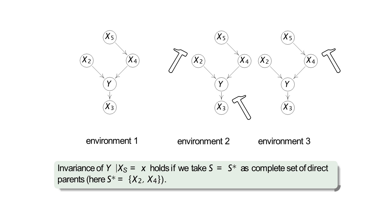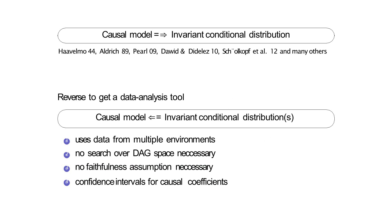It's been known that if you have the right causal variables, you have this invariance. The new idea is to turn this around and translate it into a data analysis tool: instead of saying 'if I have the causal model I know I have an invariant distribution,' you look for all invariant conditional distributions and use that to find the causal model and get confidence statements. You really need data from multiple environments — if you just have observational data, this idea won't work.